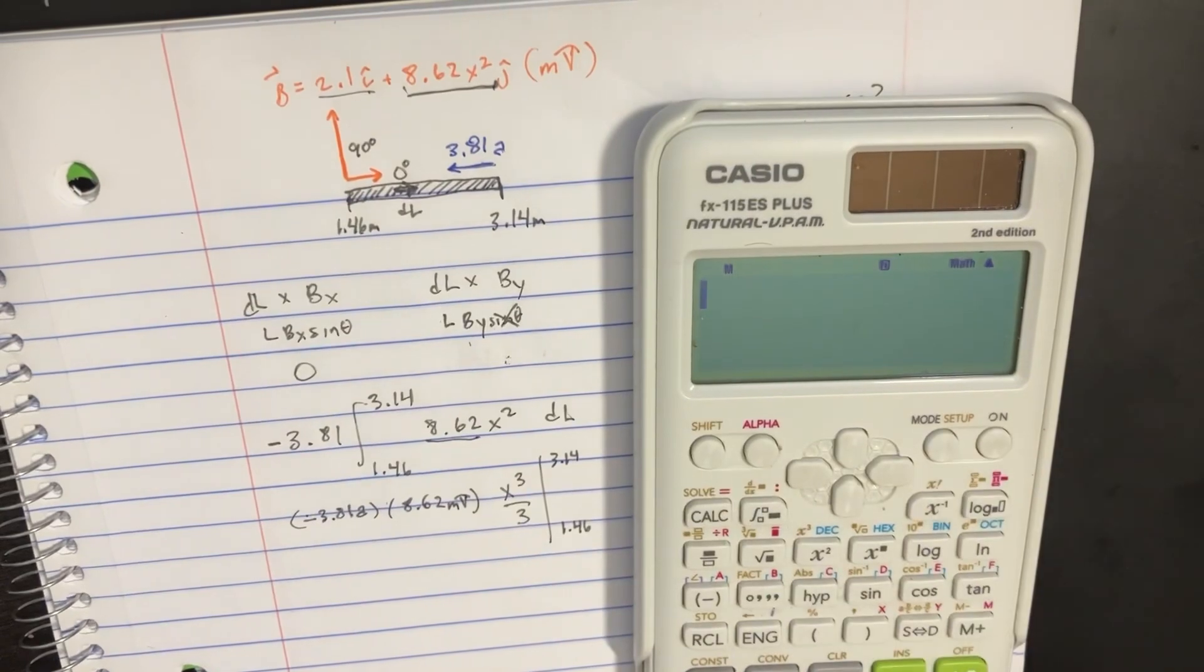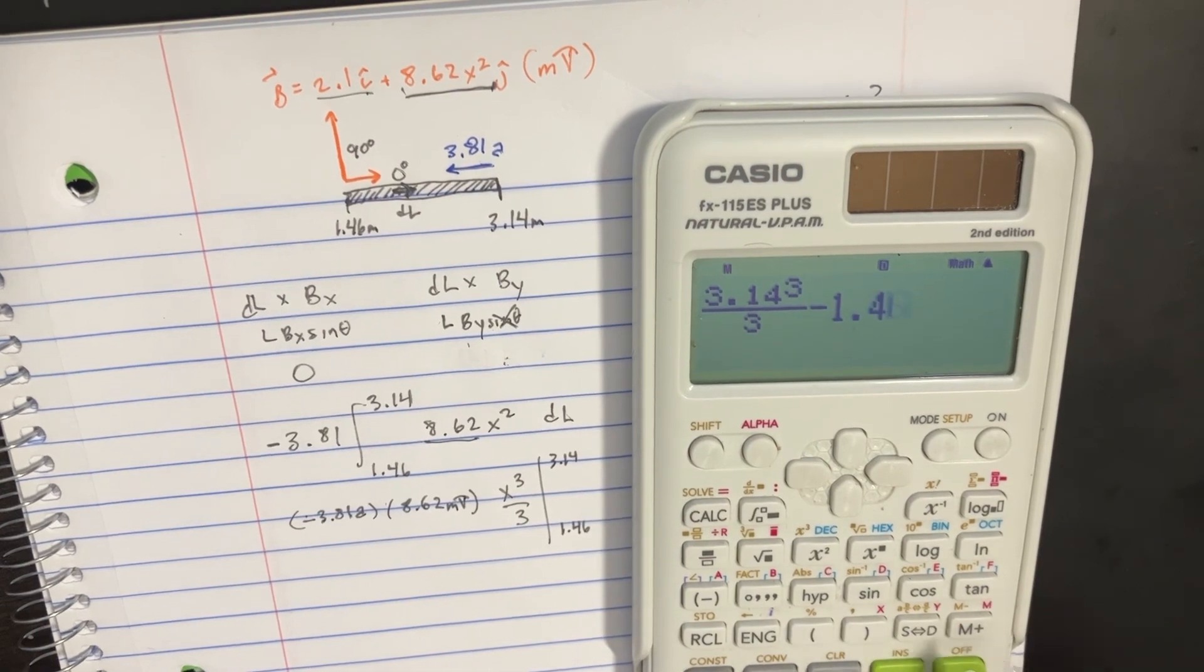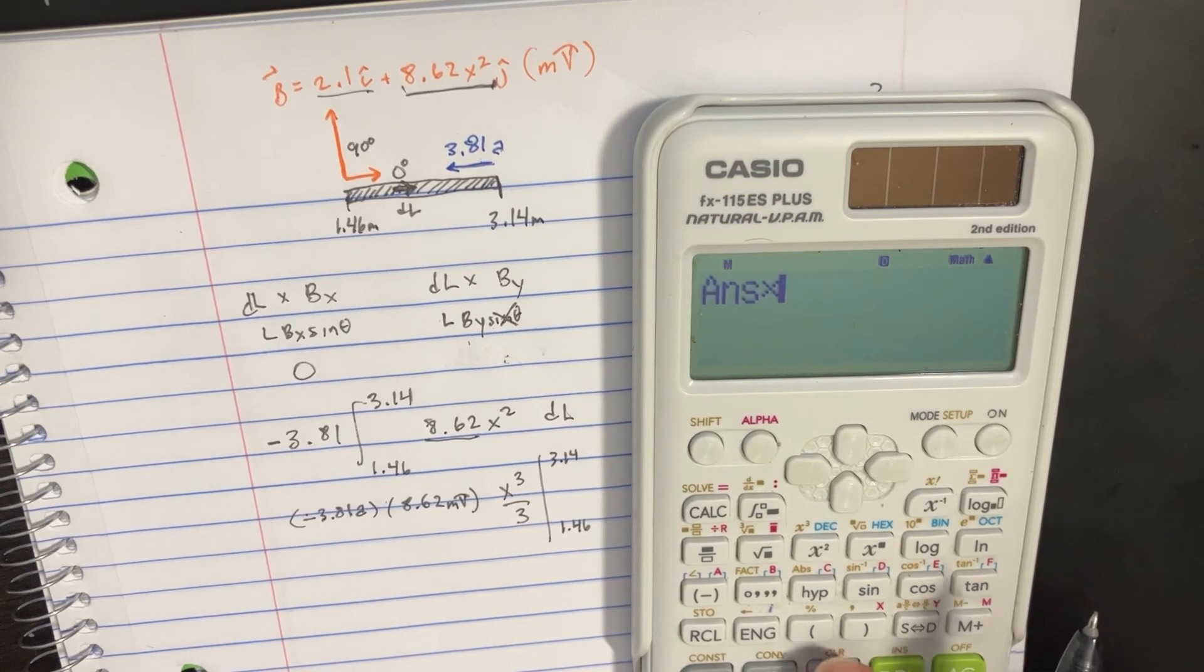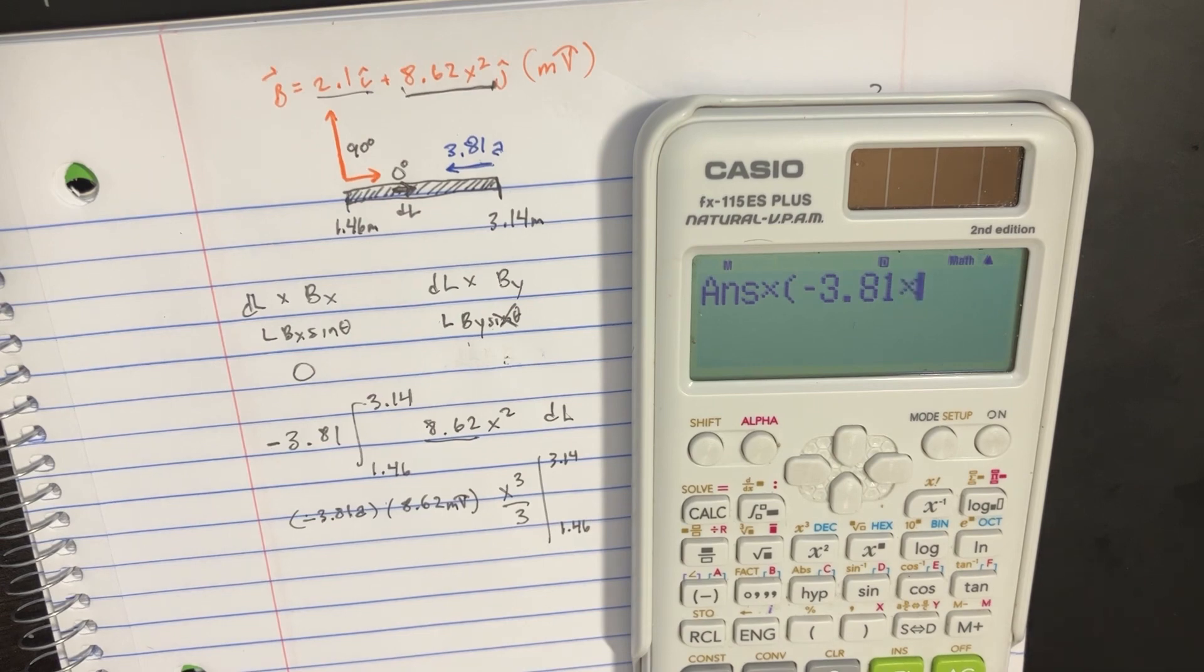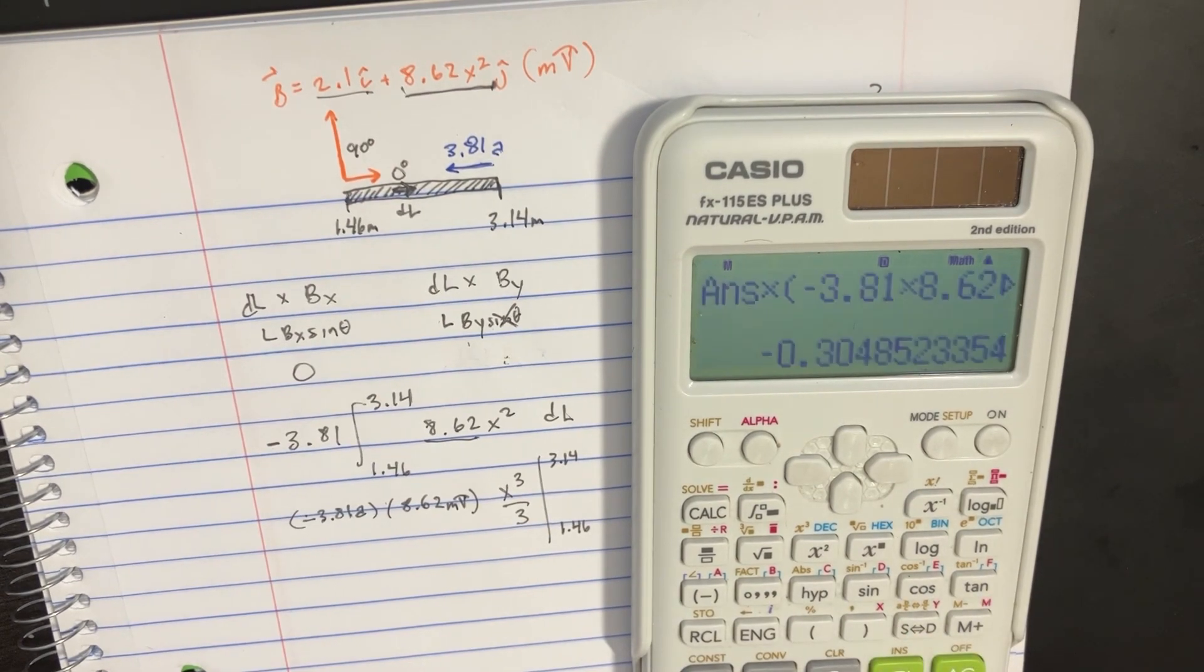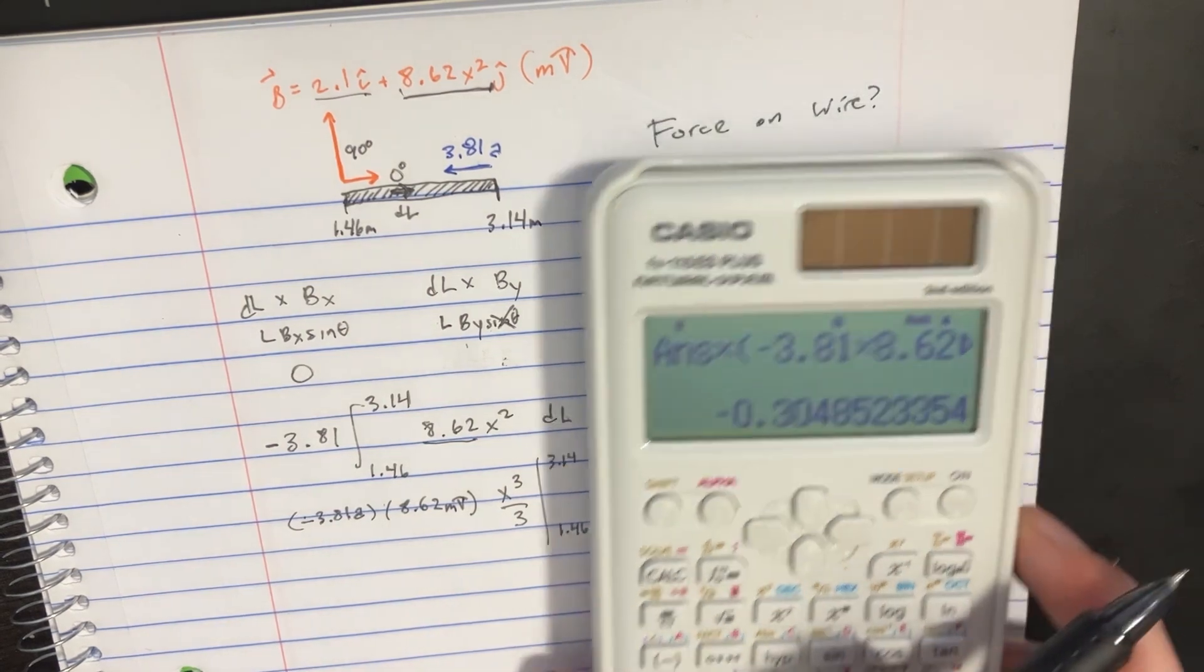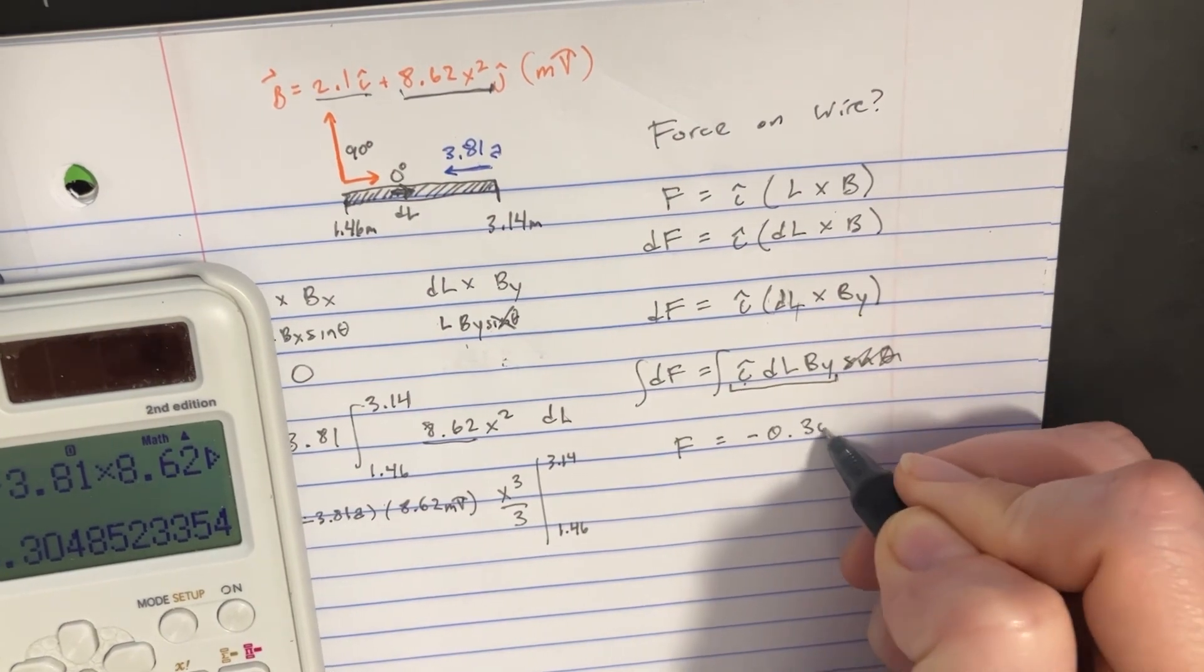We do that in our calculator: 3.14³/3 minus 1.46³/3, then multiply by negative 3.81 times 8.62. We get negative 0.304 or 0.305 here. The force equals negative 0.305.